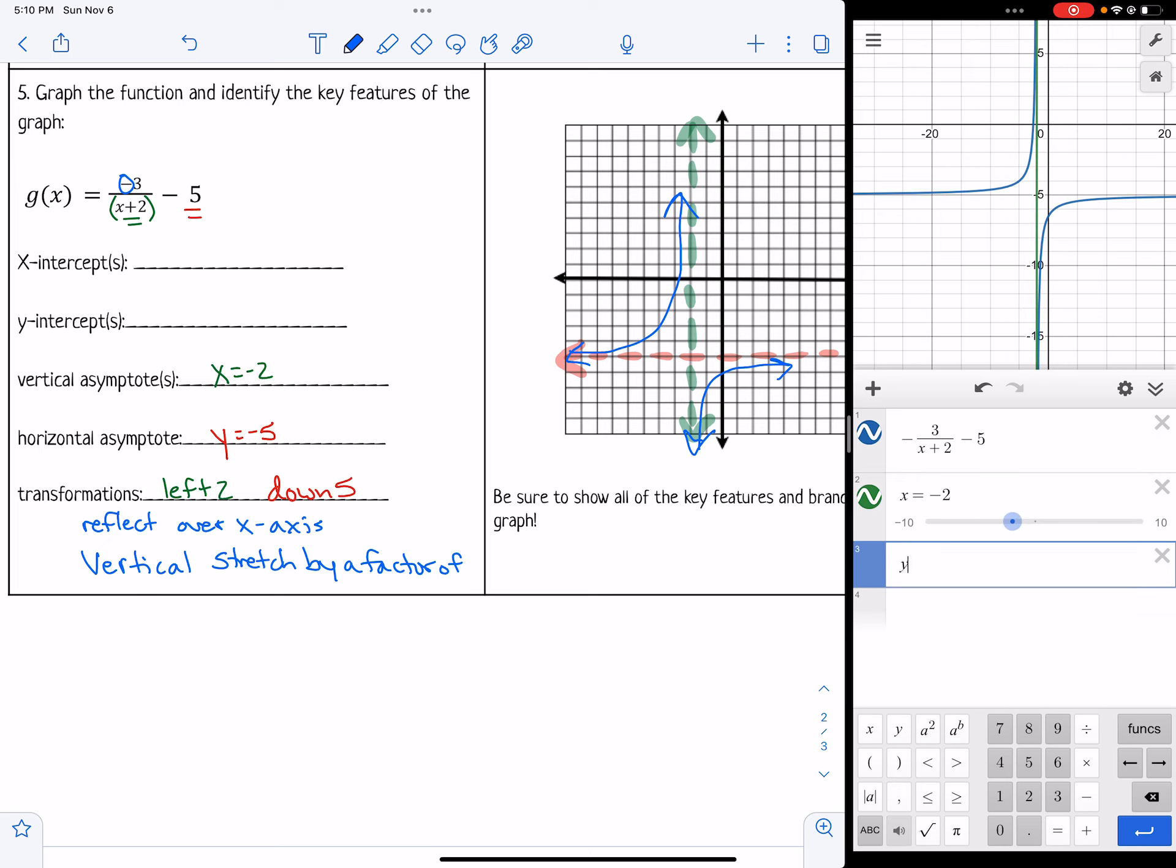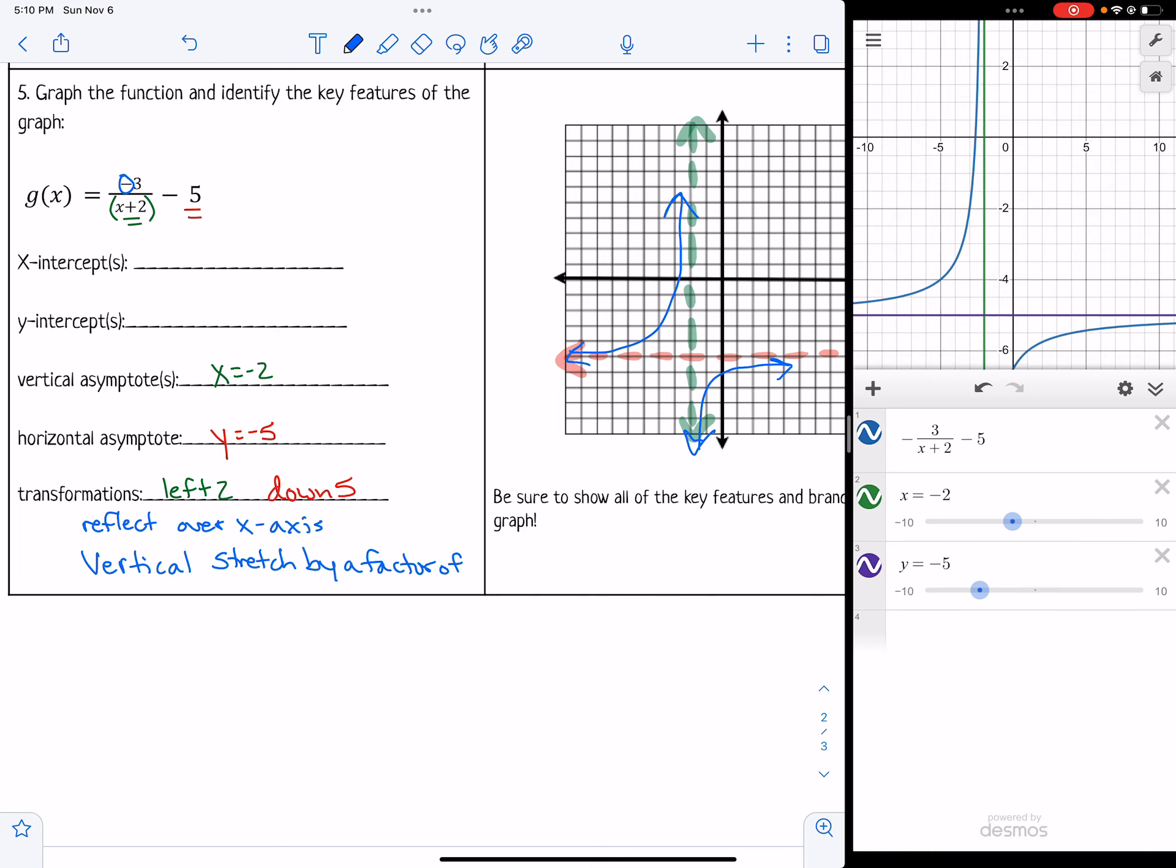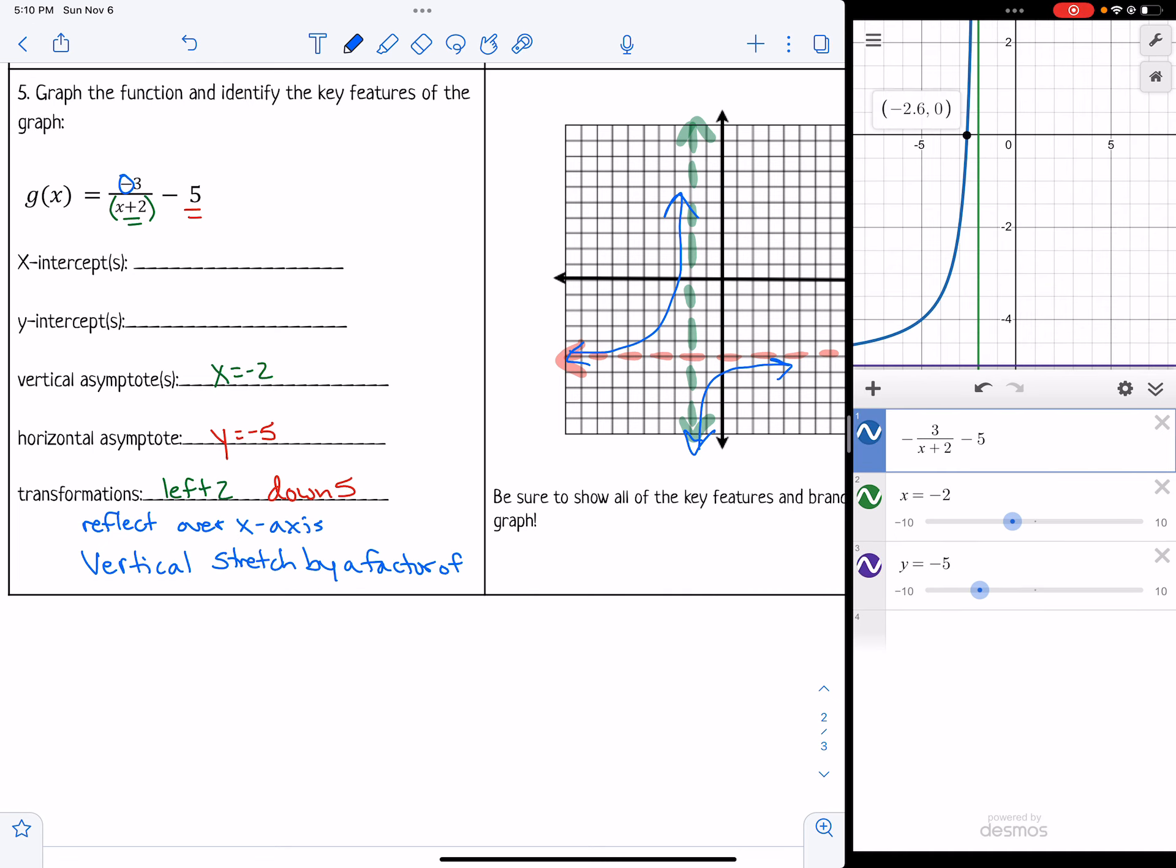So x equals negative 2. Looks good. Lines up with my graph. Y equals negative 5. Also looks nice. Lines up with my graph. And then I just need the x-intercept. Just make sure you're clicking on the right line there or turn those off for just a minute.